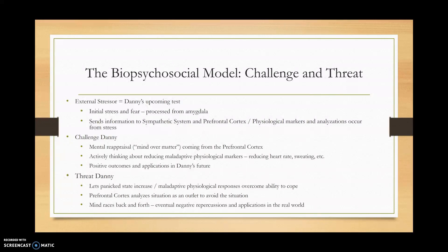He will begin to think of ways to avoid the stressor, with his mind racing back and forth over what he could possibly do. However, in the end, as opposed to the challenge character, threat Danny will not be decisive. His mind races back and forth, and he eventually comes down to two options: he could email an excuse to the professor, or simply own up to his mistake and take the exam without studying. This is his maladaptive process, and it will eventually lead him to procrastinate for hours on end, avoiding dealing with how he was going to tackle the exam.